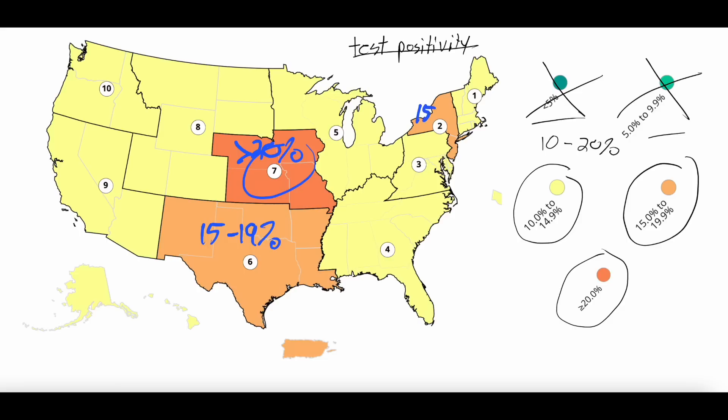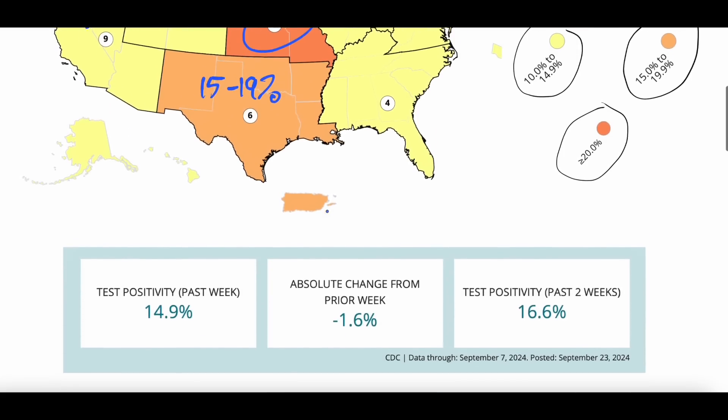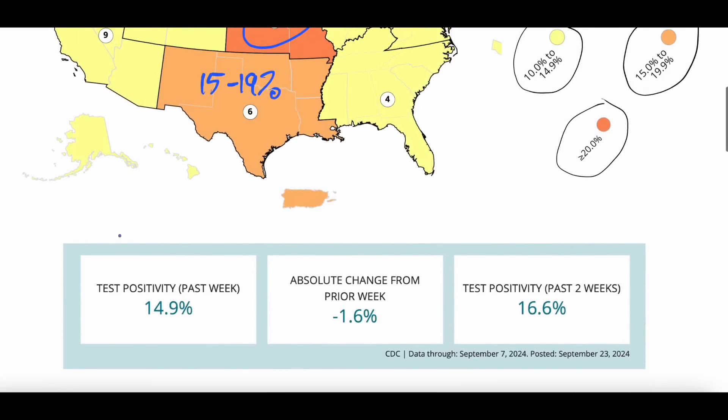The biggest areas that you can see here in the central U.S., we have some in the south here. The central U.S. is greater than 20 percent test positivity. Down in the south surrounding Texas, we have the 15 to 19 percent test positivity. Up in the northeast, same thing, 15 to 19 percent. And everywhere else is 10 to 15 percent. So everywhere has at least a 10 percent test positivity with some central areas that are seeing more positive tests.